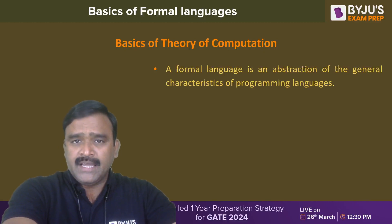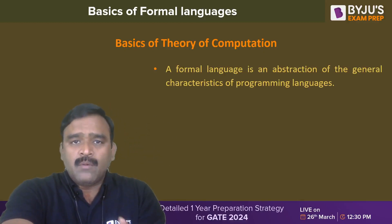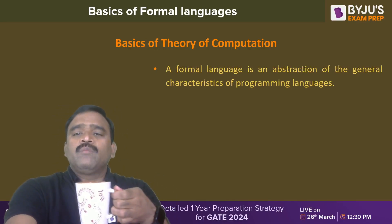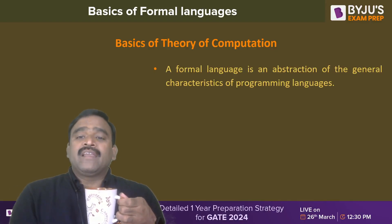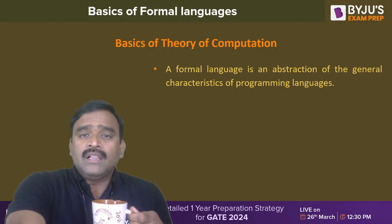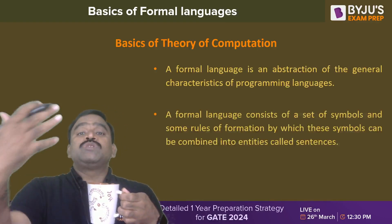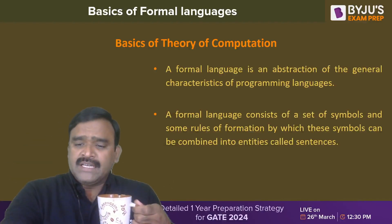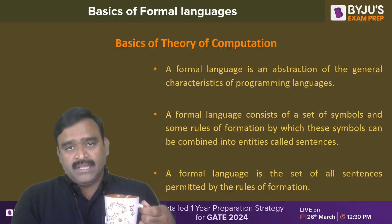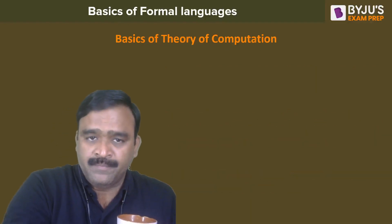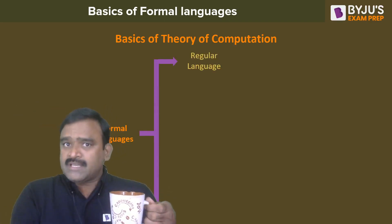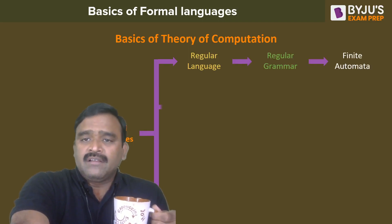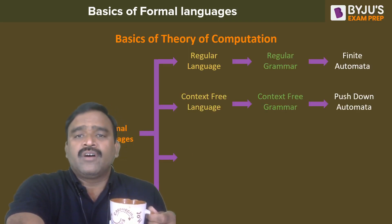I want to give you a definition in short form and then visualize the approach for understanding formal languages and their relations. A formal language is an abstraction of the general characteristics of programming languages — all computer languages are originated from the languages we are going to study. Any formal language consists of a set of symbols and rules for formation of sentences, with a formal grammar for framing those sentences.